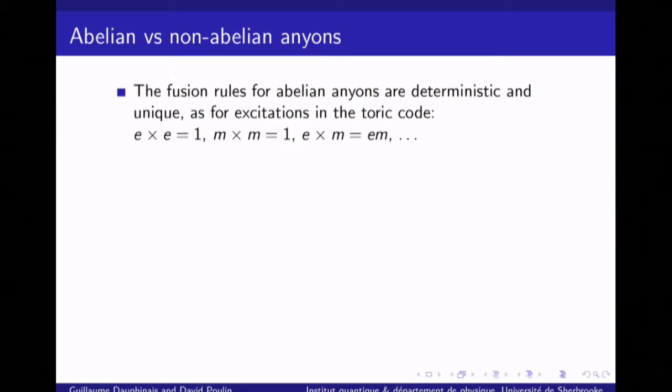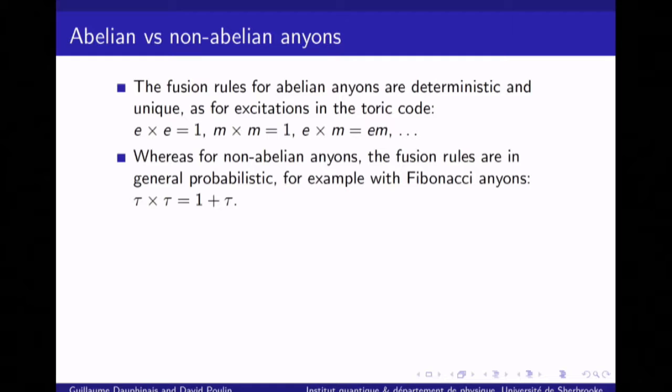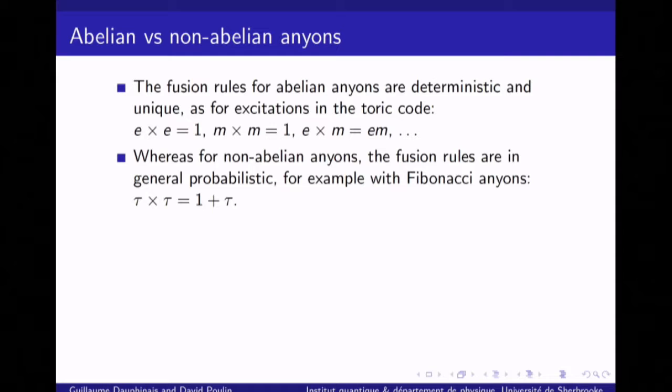In contrast, there are more exotic particles: the non-abelian anyons. In this case, fusing two particles may have more than one fusion channel. For example, the Fibonacci anyons — if you bring two excitations labeled by tau together, they can either cancel each other and go back to the vacuum, or they can fuse to a single Fibonacci anyon. You can also read these as splitting rules: create from the vacuum a pair of excitations, or take a single Fibonacci anyon and split it into two.